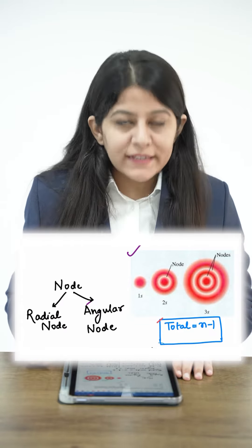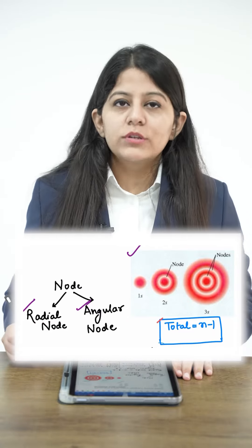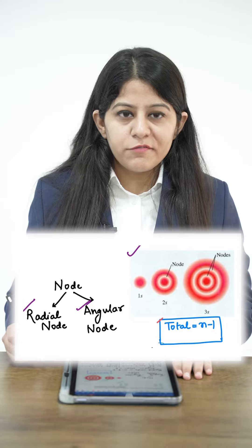So how can we find the nodes? We have two types of nodes. One is your radial node and second is your angular node. Both can be found using simple formulas.